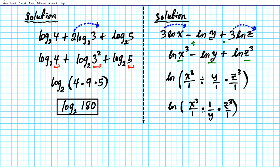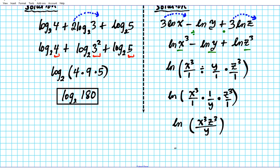Multiplying the numerators and denominators gives us the natural logarithm of x cubed times z cubed over y. Since x cubed and z cubed have identical powers, we can factor this as the natural logarithm of (xz) to the third power divided by y. That is your final answer.